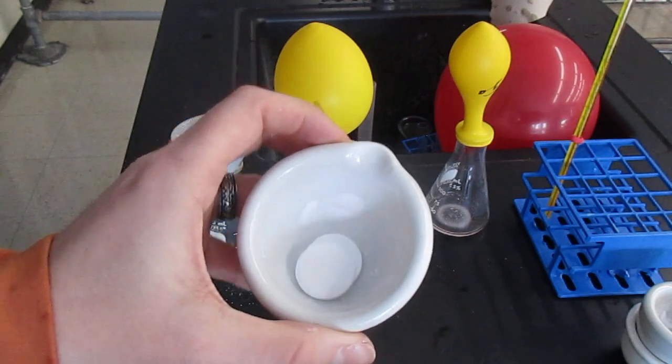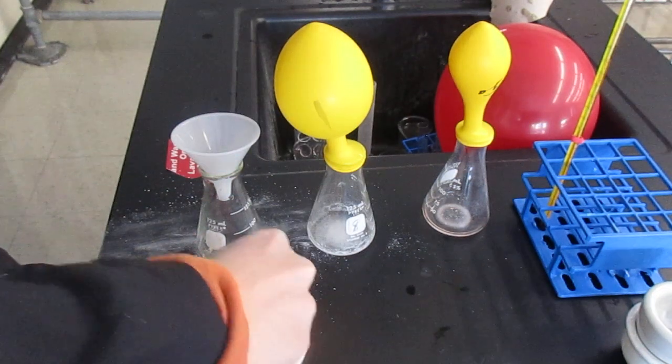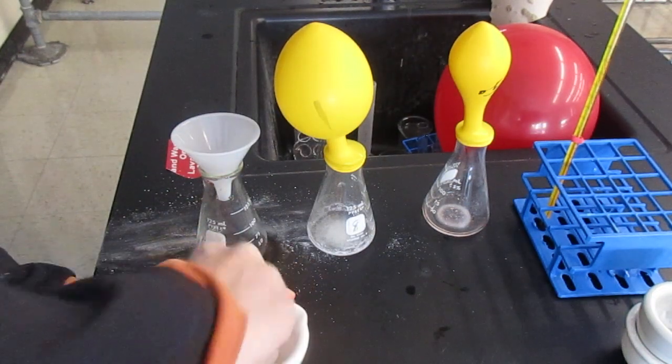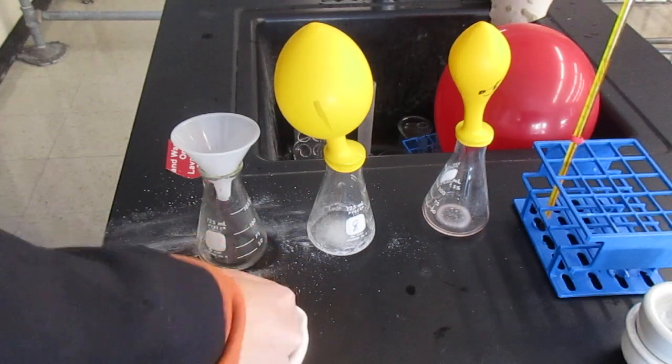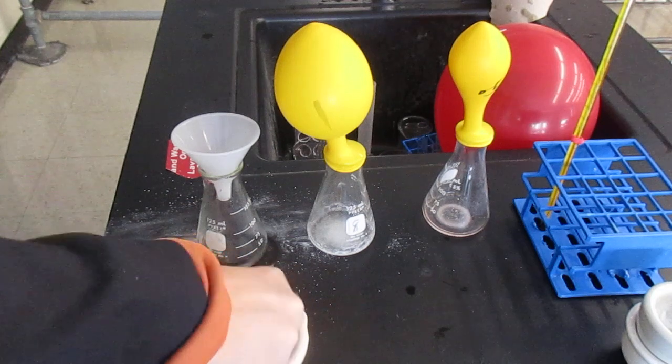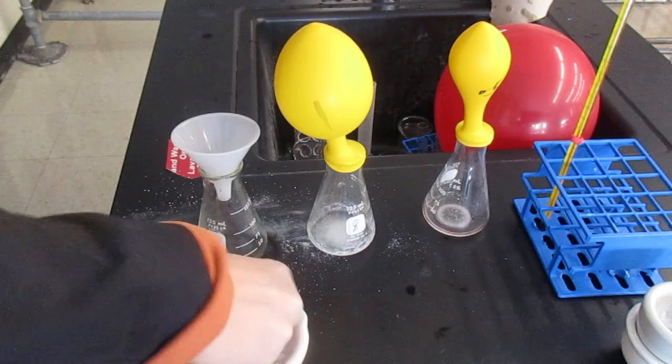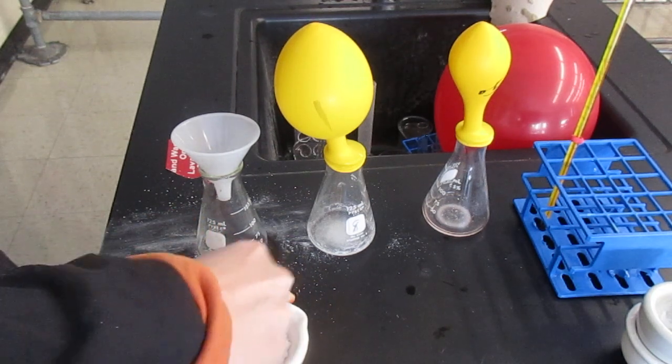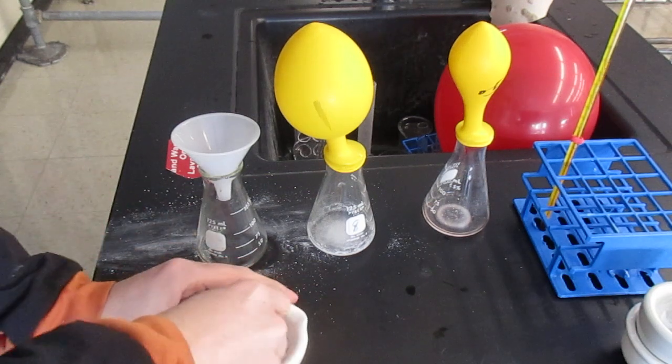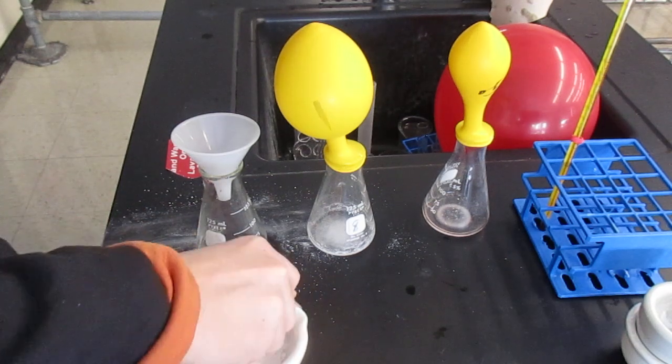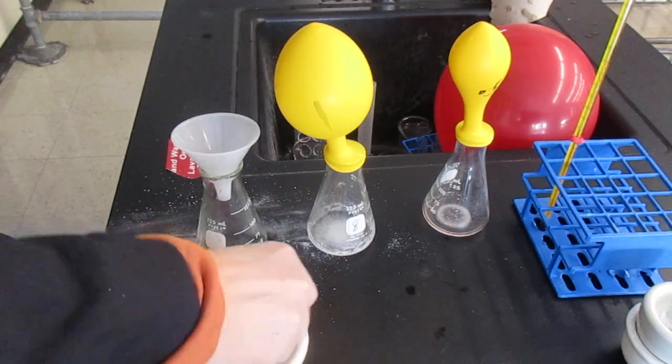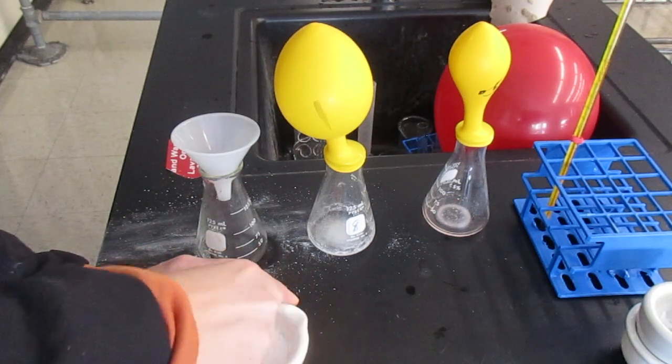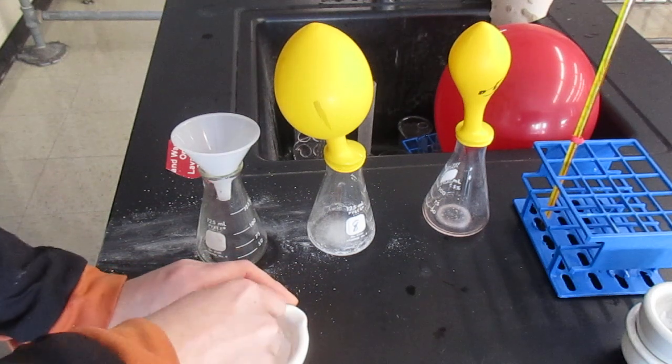So two Alka-Seltzer tablets are in here. Just going to crush this to make sure there's not really that much chunks in there. The nine milliliters of water is already back into the flask, and this time I grabbed a funnel to help me not spill, which I should have done the first time, and to be honest with you, I just wasn't thinking very well.